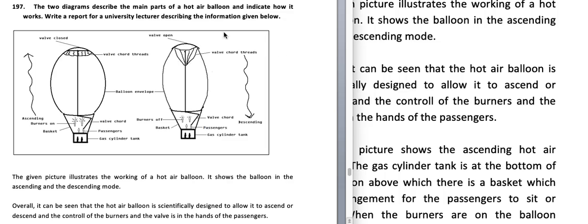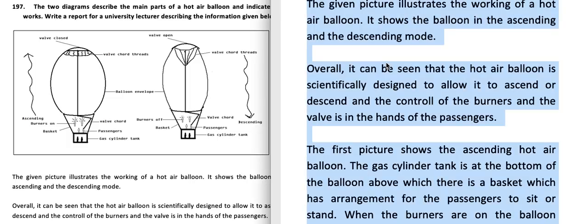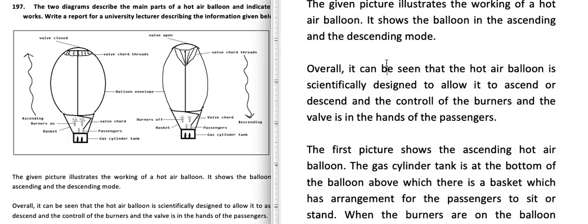The two diagrams describe the main parts of a hot air balloon and indicate how it works. You can see this is an ascending hot air balloon — this arrow shows it's going up, and this arrow shows it's going down. This is the descending hot air balloon. Let's see how to go about writing this.